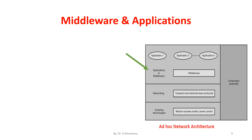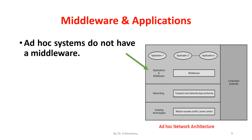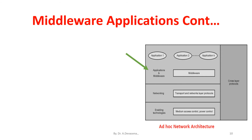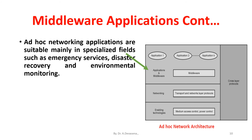Middleware and applications: Ad Hoc systems do not have a middleware; however, it is developed to rely on each application to handle all the services it needs in different environments. Ad Hoc networking applications are suitable mainly in specialized fields such as emergency services, disaster recovery, and environmental monitoring. In addition, Ad Hoc systems can be widely used in home networking, search and rescue operations, commercial and educational applications, sensor networks, etc.